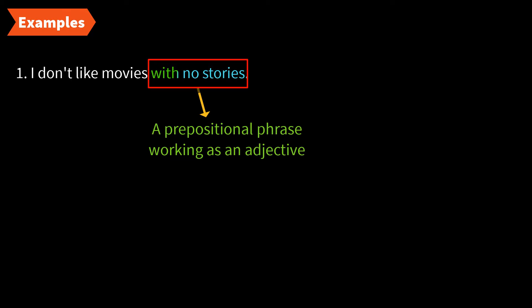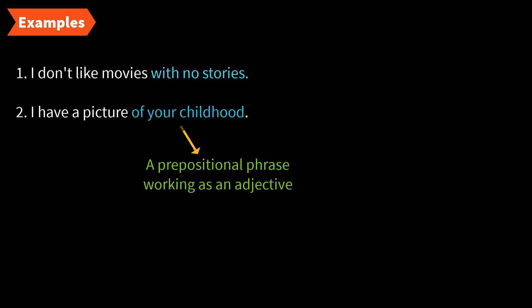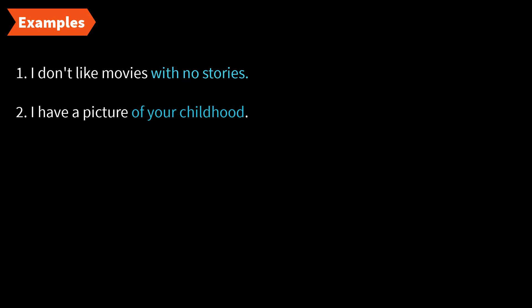'I have a picture of your childhood.' Here, 'of your childhood' is the adjective phrase giving information about the noun 'picture.' It is basically a prepositional phrase starting with the preposition 'of,' but since it is a phrase working as an adjective, we call it an adjective phrase. Now let us look at some adjective phrases starting with a participle.